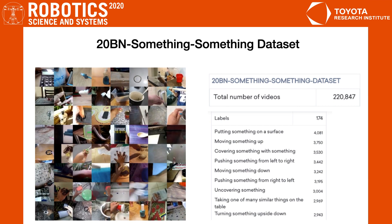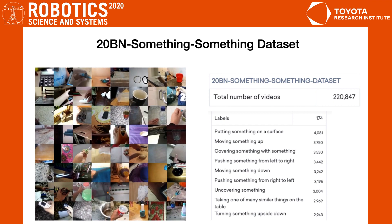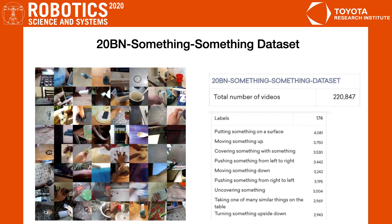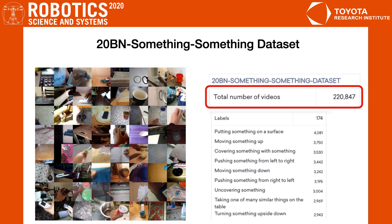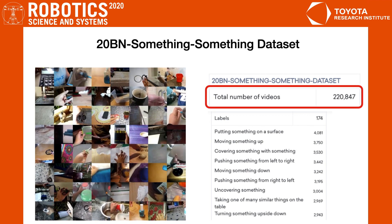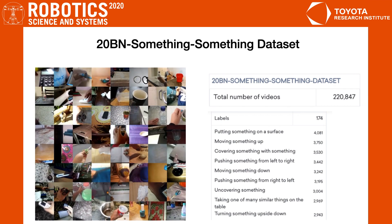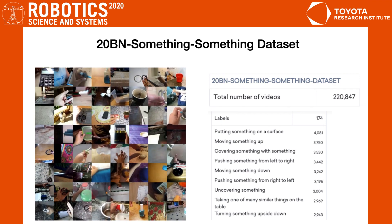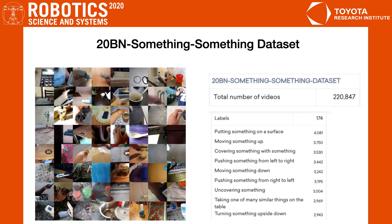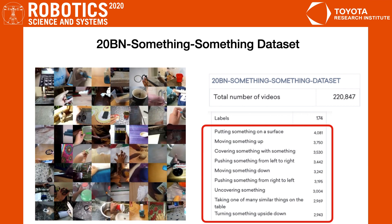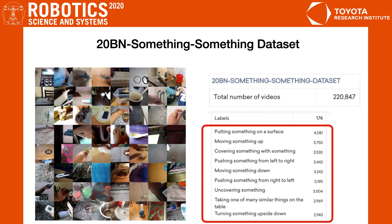We use the 20 Billion Something-Something dataset as our visual demonstrations. It contains around 200k video clips with 174 different action classes. Each video clip is annotated with a task description, such as 'putting something on the surface' or 'moving something up.'